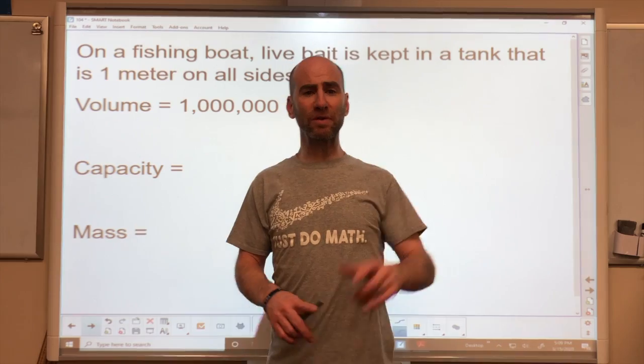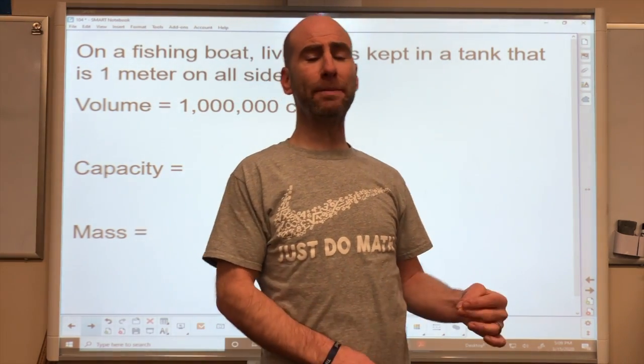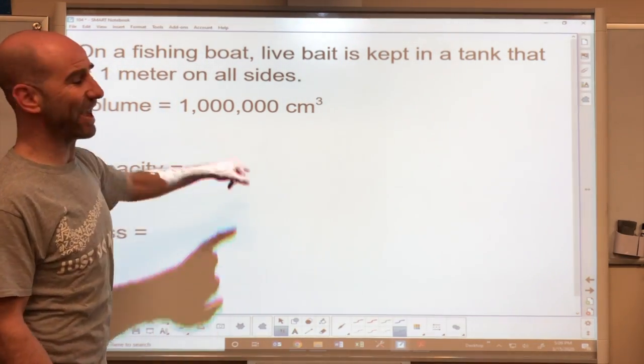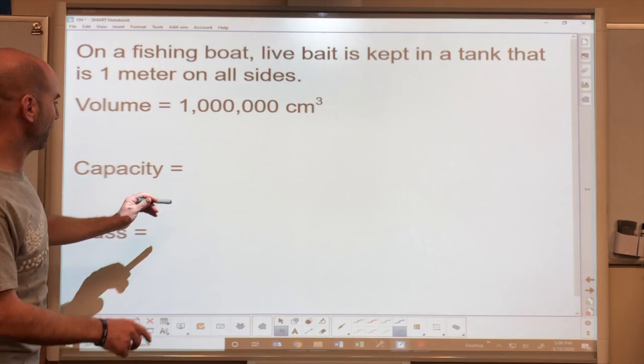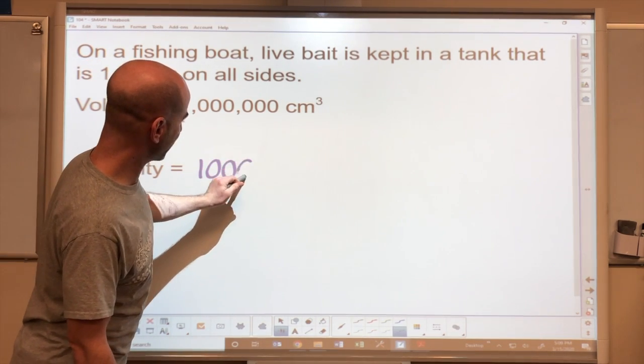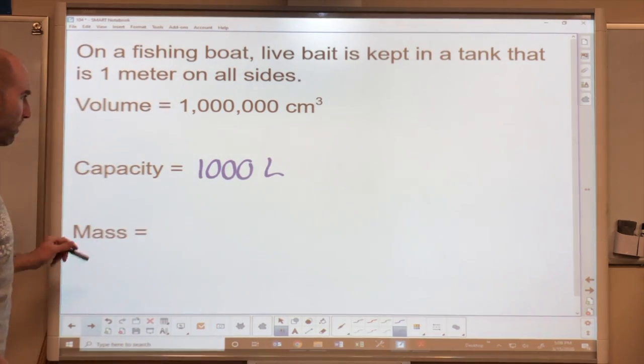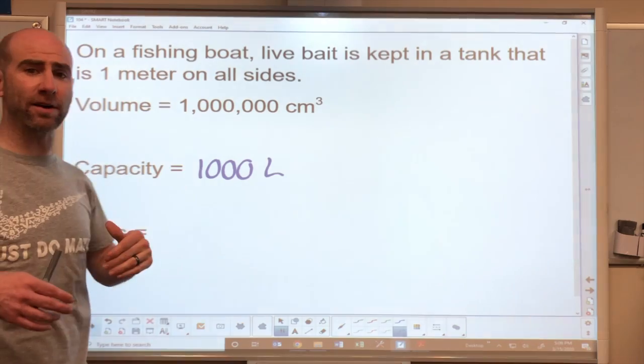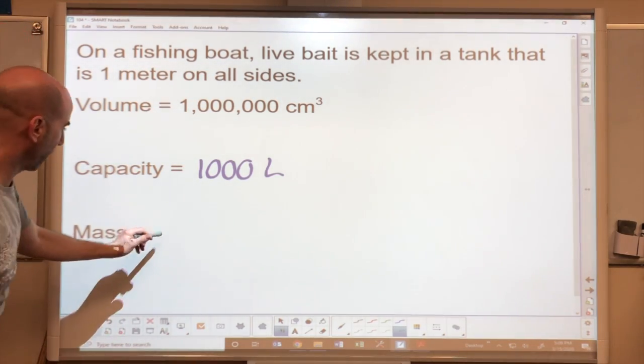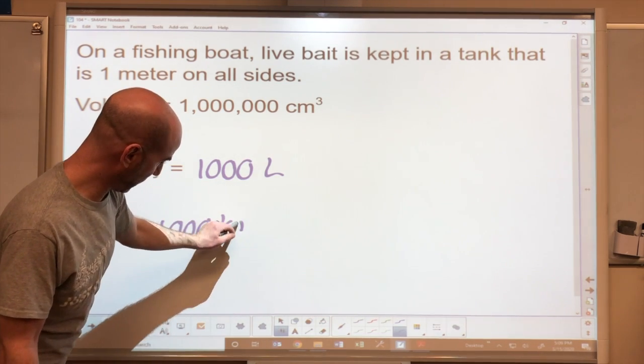Okay, so remember one of the conversions. It had a thousand cubic centimeters. Well, divide this by a thousand and we'll see that this capacity is 1,000 liters of water and the weight of the water in this storage tank on the boat will be 1,000 kilograms.